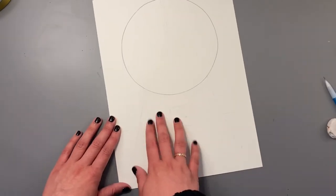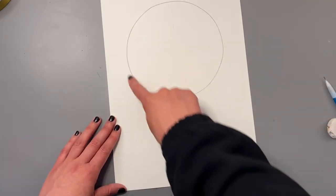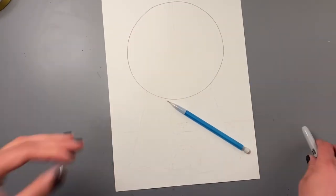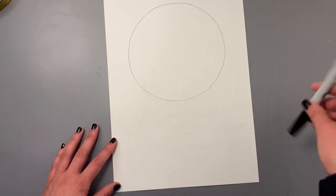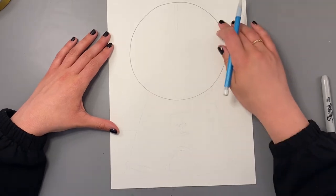So for your supplies, you'll need your piece of paper with a circle traced on it, a pencil, and a black marker like a sharpie for outlining your gumball machine with. So we already have our circle drawn for us.